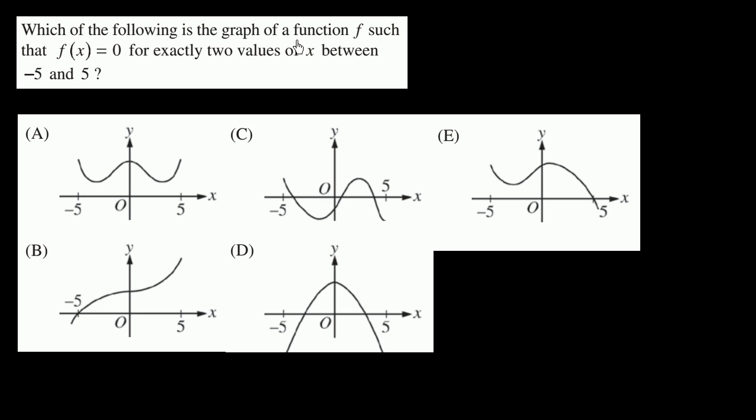Which of the following is the graph of a function f, such that f of x is equal to 0 for exactly two values of x between negative 5 and 5?